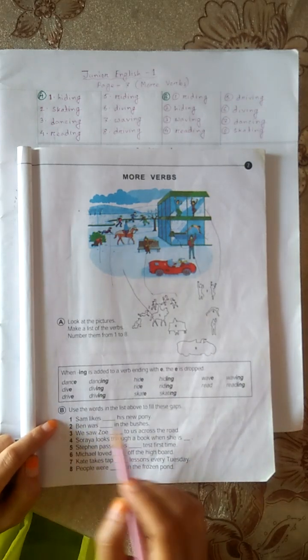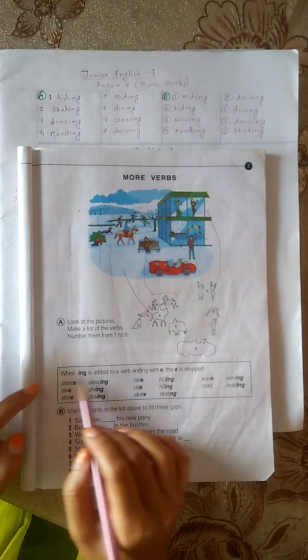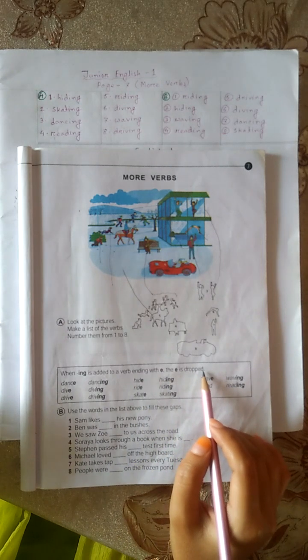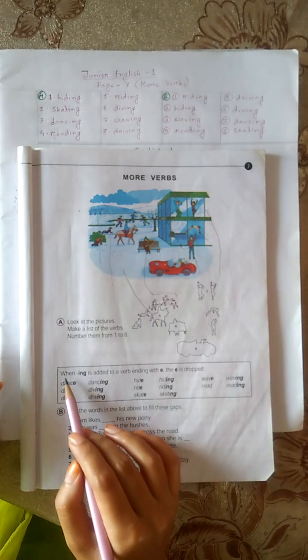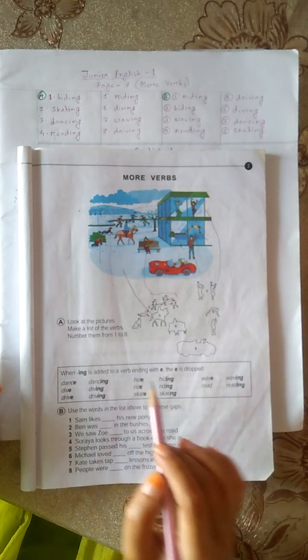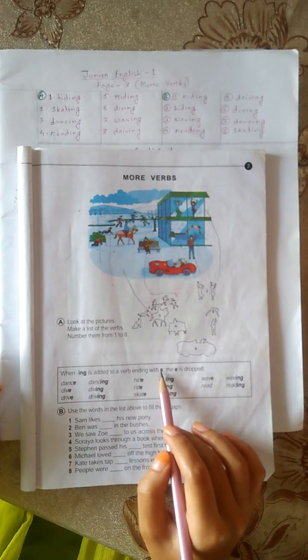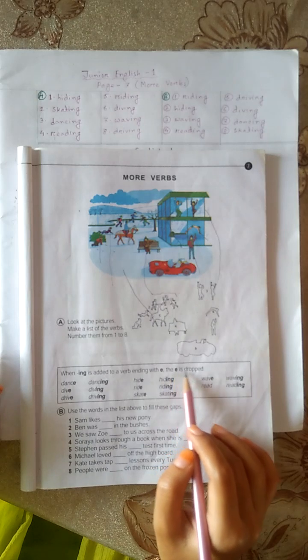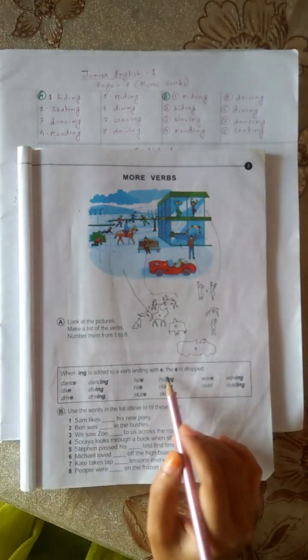B. We are given some verbs. When I-N-G is added to a verb ending with E, that E is dropped.